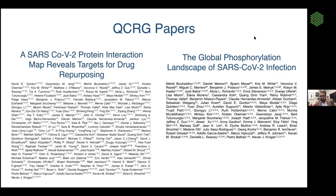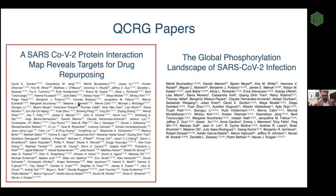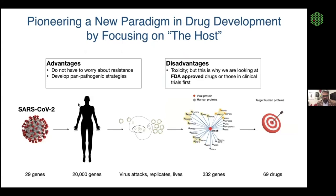The first paper: the approach we're taking at QCRG is to try to understand how the virus comes in, hijacks, and rewires the host. There's a lot of effort ongoing, as you heard in the last talk, with strategies and drugs trying to target the virus — and that's fantastic. We're taking a different tack: we're looking at the host.